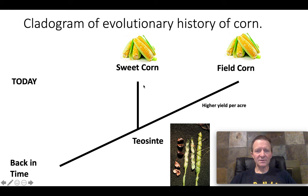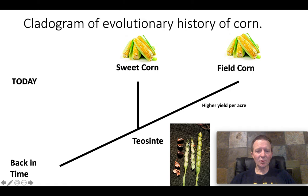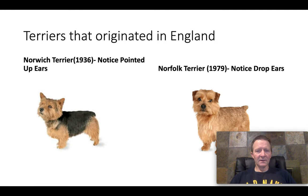A common misconception is that one individual evolved directly into another. That's not the way it works. If we go back in time, neither of these two varieties existed — only this ancestral variety existed. We'll deal with that idea more in the future.